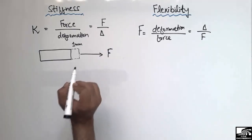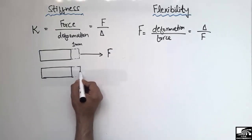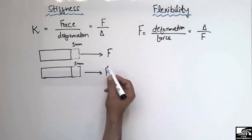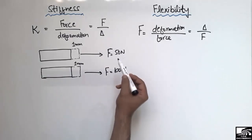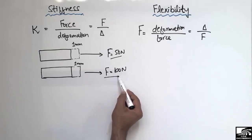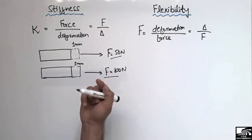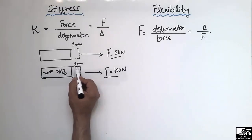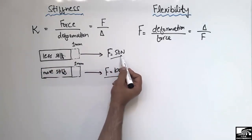Let's consider the same material where the same one millimeter deformation is produced, but with different forces. For one material, the applied force is 50 newton, and for the other material, the applied force is 100 newton. The material requiring less force — 50 newton — to create a unit deformation is the less stiff material, while the material requiring more force — 100 newton — for the same one millimeter deformation is the more stiff material.